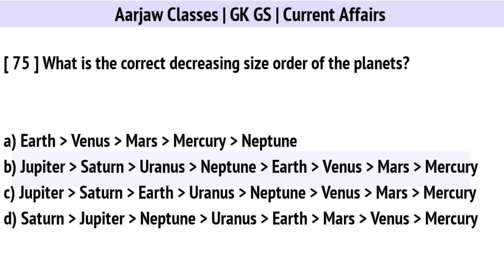What is the correct decreasing size order of the planets? Correct option is B: Jupiter, Saturn, Uranus, Neptune, Earth, Venus, Mars, Mercury.